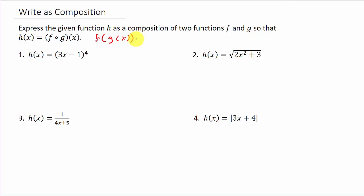Let's look at this problem here. To work this problem, we need to figure out what f and g are, so that when we do this, we end up with this - the 3x minus 1 to the 4th.